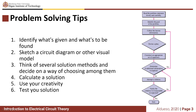Before we proceed with the first part of our topic, here are some tips in problem solving. First, identify what's given and what's to be found. Next, sketch a circuit diagram or other useful model. Third, think of several solution methods and decide on a way of choosing among them — we will discuss what these solution methods are. Fourth, calculate a solution. Fifth, use your creativity. And lastly, test your solution.